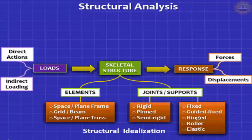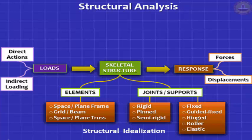These are idealizations. Similarly, supports are modeled as being either fixed, guided fixed, hinged, or roller. You could also have spring supports — the most generic kind, called elastic supports. It is important to deal with a structure that is stable. So we have to first check the stability of the structure — is it stable or unstable? Only if it is stable is it capable of resisting loads without deforming into a mechanism.